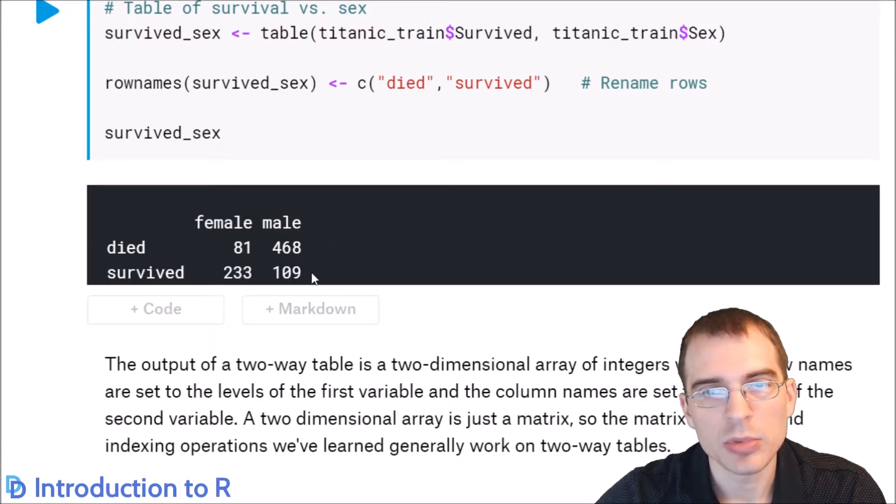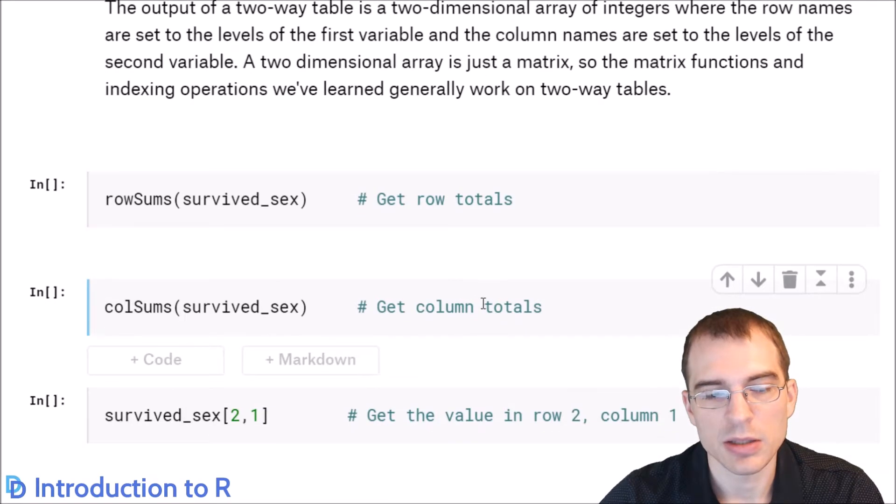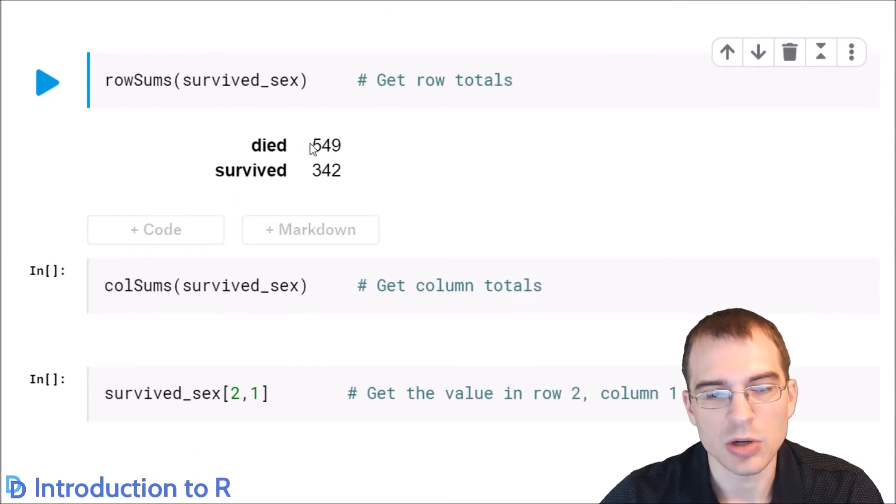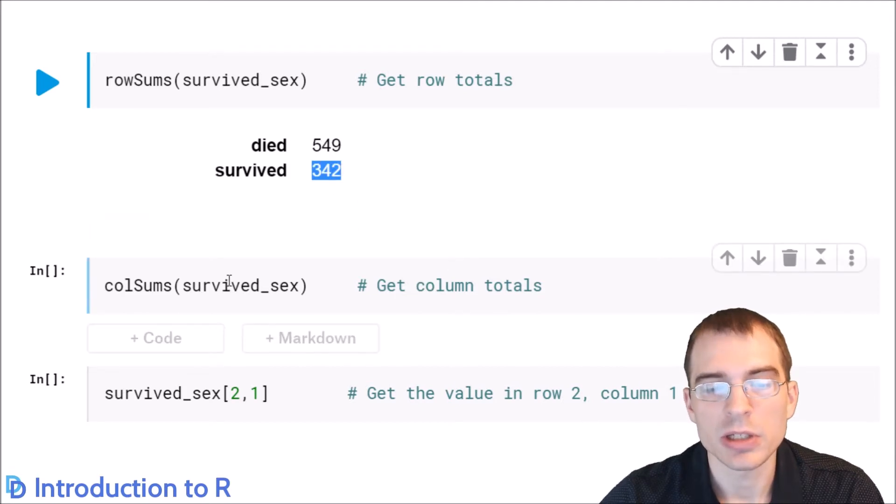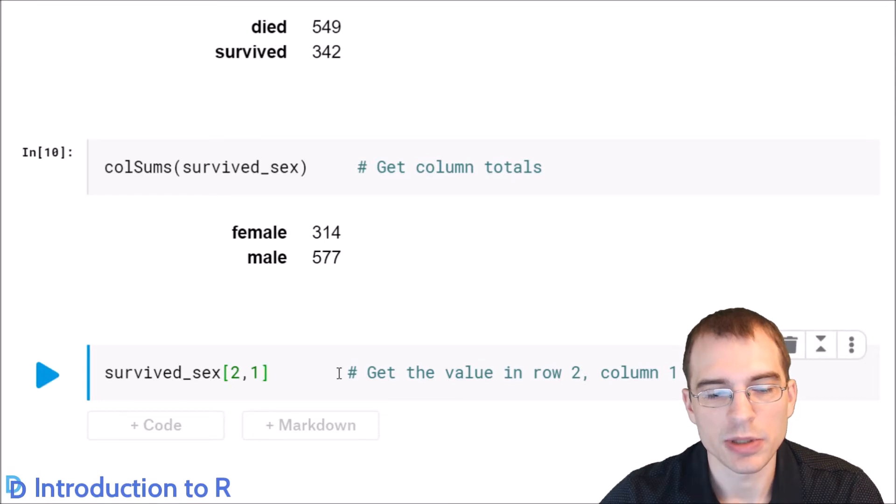Now, a two-way table is just stored as a matrix of integers. So all of the functions we learned for matrices will also work on this table. For instance, we can do things like get the sum of the rows with row sums. And we can see that in total, this many people died and this many people survived. Similarly, we could get the sum of the columns, which would show us how many total men and women there were. And we could also just use indexing to grab an individual cell. So here we'll get the cell in row 2, column 1.